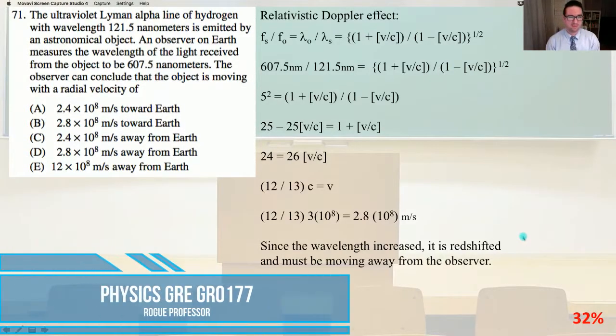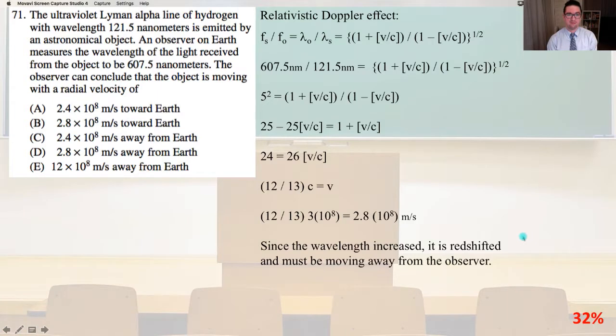We're in this together and we're on problem number 71 of Physics GRE, GR 0177. The ultraviolet Lyman-alpha line of hydrogen with wavelength 121.5 nanometers is emitted by an astronomical object. An observer on Earth measures the wavelength of the light received from the object to be 607.5 nanometers. The observer can conclude that the object is moving with a radial velocity of.